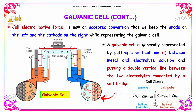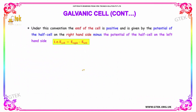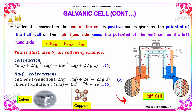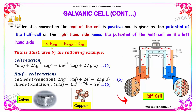By accepted convention, the anode is placed on the left and the cathode on the right when representing galvanic cells. A galvanic cell is generally represented by putting a vertical line between the metal and electrolyte, and a double vertical line between the two electrolytes connected by a salt bridge. Under this convention, the EMF of the cell is positive and is given by the potential of the right-hand half cell minus the potential of the left-hand half cell.